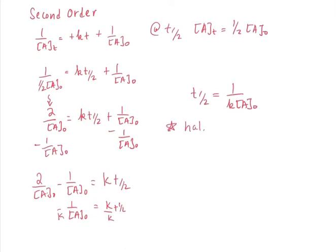The important thing here is that for second order, the half-life does depend on the concentration of A₀. We'll see the same thing for zeroth order. If you start with one molar, the time to get to one half molar is different than if you start with two molar — you get a different half-life. This is unique to second-order (and zeroth-order) kinetics. The only one that's independent of A₀ is the first order, and that makes it special.